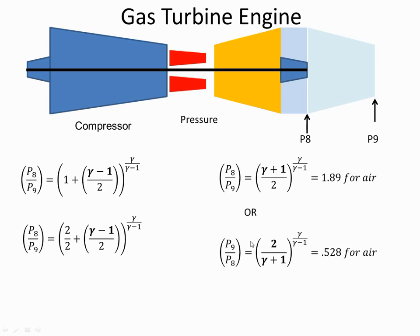Or if I inverted it, as it is in some textbooks, it's P9 over P8. It's 0.528, which is one way of looking at it.